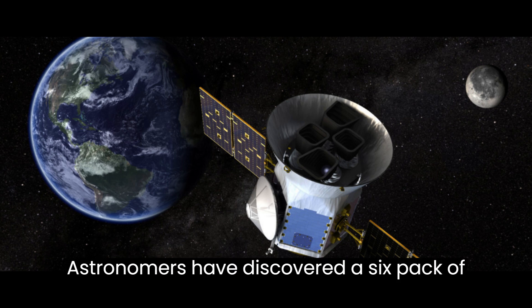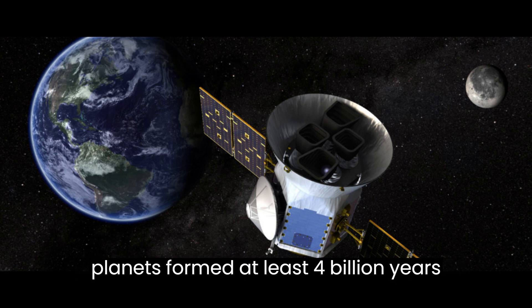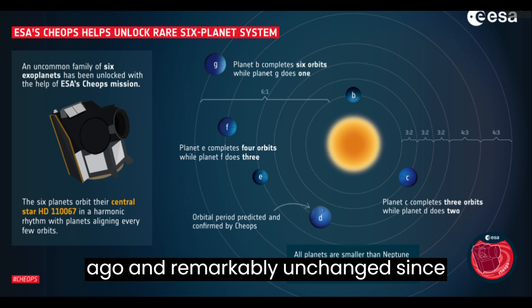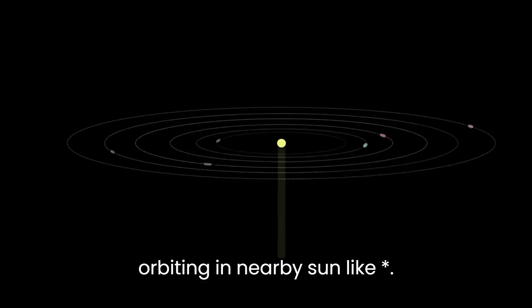Astronomers have discovered a six-pack of planets, formed at least 4 billion years ago and remarkably unchanged since, orbiting a nearby Sun-like star.